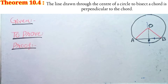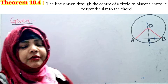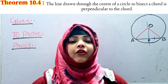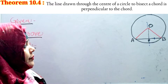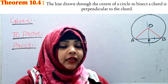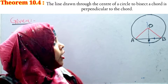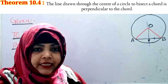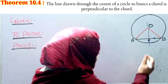Theorem 10.4 says: the line drawn through the center of a circle to bisect a chord is perpendicular to the chord. Theorem 10.4 is just the reverse of Theorem 10.3. In 10.3, we simply said that the line from the center passes perpendicular to the chord and bisects it — that is, AP equals PB.